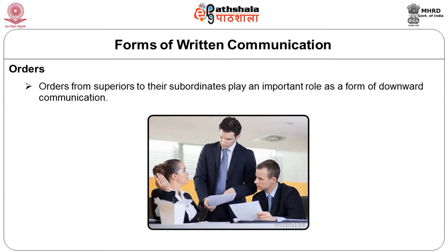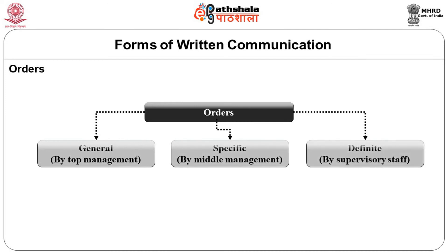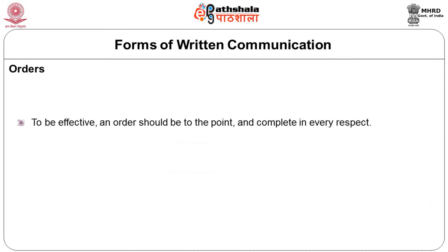The first form of written communication is orders. Orders from superiors to subordinates play an important role as a form of downward communication. Orders may be general, specific, or definite. Orders issued by top managers are of general type; within the framework of general orders, mid-level managers prepare specific orders for onward communication to their supervisors, who in turn make definite orders and communicate them further to their own subordinates.